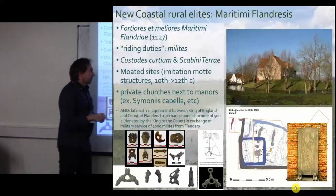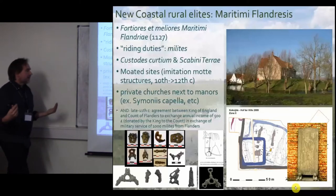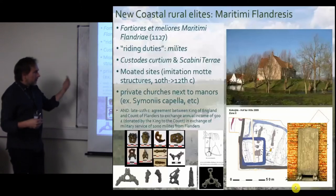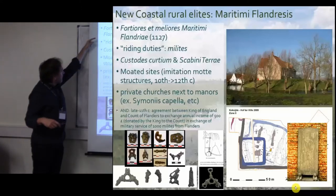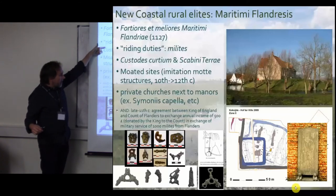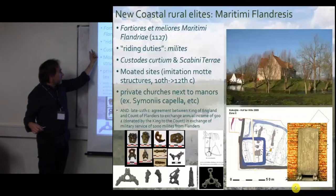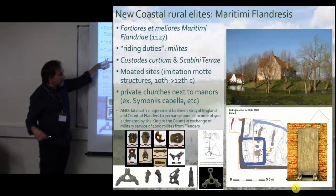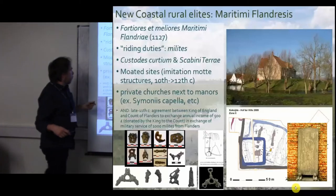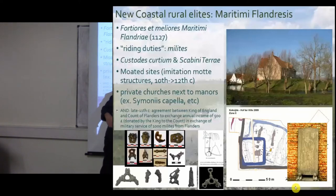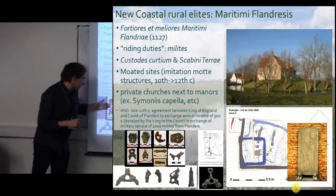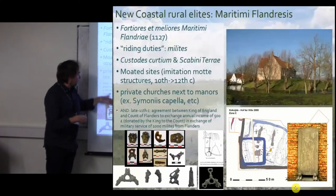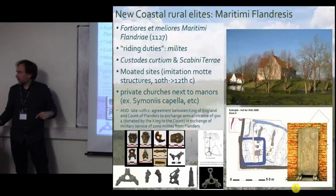The knights' sites are part of the redesign of the landscape behind the dikes. These milites controlled the environmental infrastructure; they are called the 'potiores et meliores,' they have riding duties, they are the scabini, and they have moated sites — imitation motte-and-bailey sites — sometimes built on top of early medieval sites, introducing this landscape language even into formerly allodial areas. Archaeologically we find a lot of horse gear on these sites, consistent with their riding duties as knights.